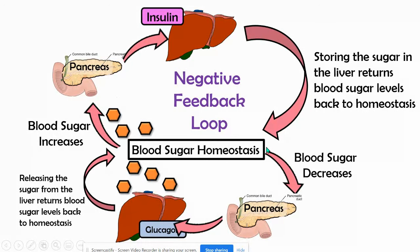On the same note, when the blood sugar decreases, that stimulus brings us away from homeostasis, so we want to reduce that and make it more negative to bring it back. So here we have a negative feedback loop of how our endocrine system works with our circulatory system in order to bring us back to balance and keep us in blood sugar homeostasis.